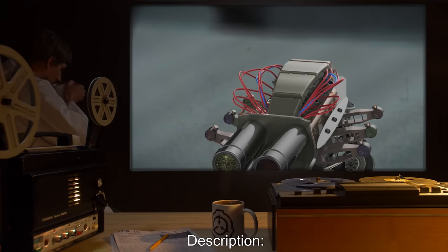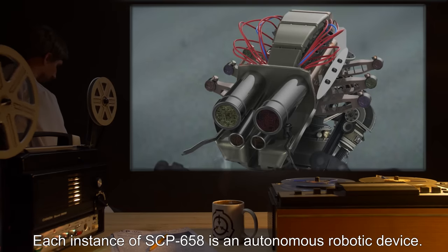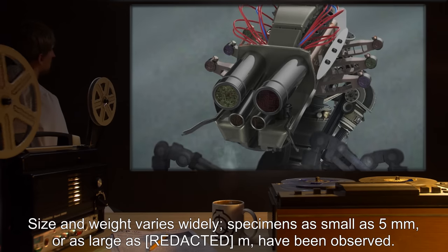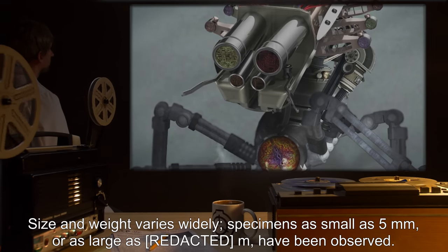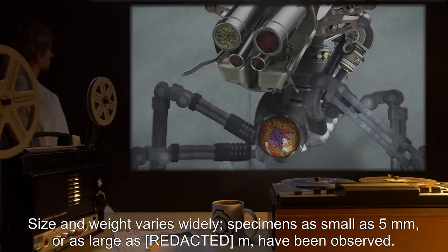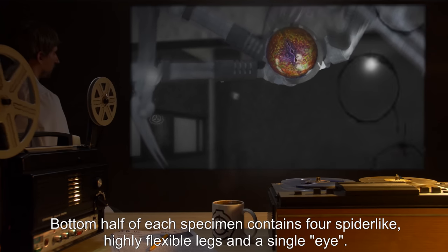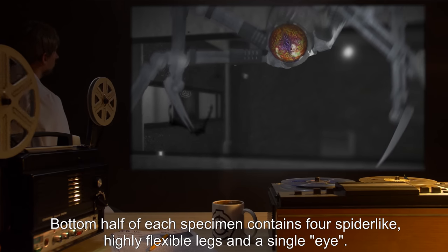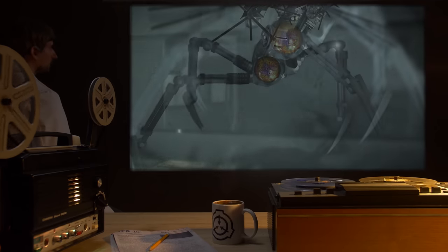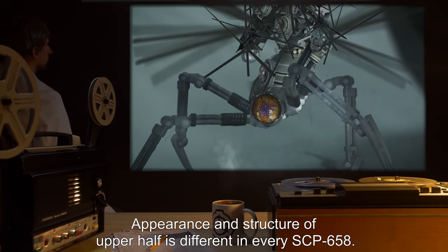Description: Each instance of SCP-658 is an autonomous robotic device. Size and weight varies widely. Specimens as small as 5 millimeters or as large as meters have been observed. Bottom half of each specimen contains four spider-like, highly flexible legs and a single eye. Appearance and structure of upper half is different in every SCP-658.